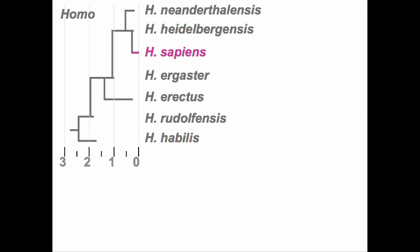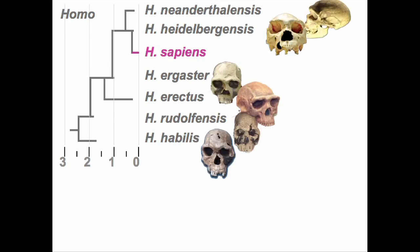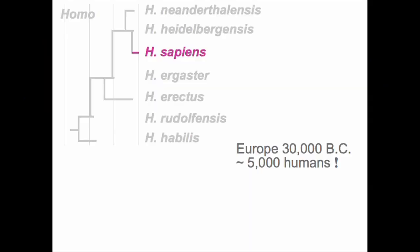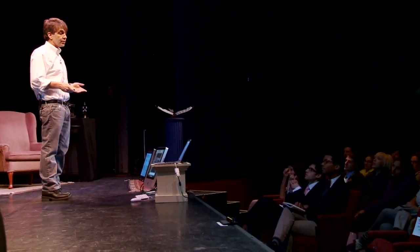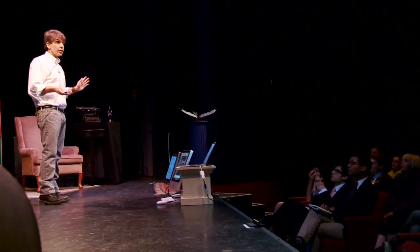Our species is quite different. We also had a number of very close cousin species, and they're all dead — they all went extinct, and we are the only ones that survived. We barely survived. Our species almost went extinct; about 30,000 years ago, it's estimated that there were barely 5,000 humans in all of Europe. That enormously reduced the variation in our gene pool. But since that time, we've had this enormous increase in our population, and that has greatly increased the variation in our genes.